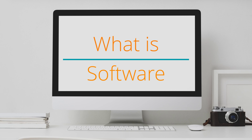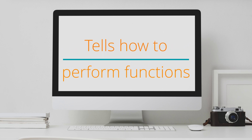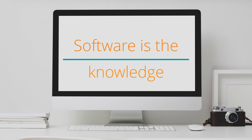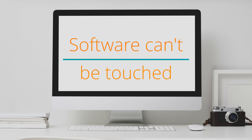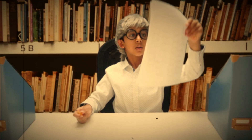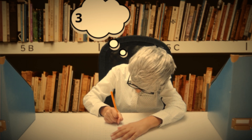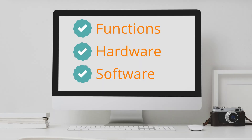Now let's see what software is. Software is a collection of data and computer instructions that tells the computer how to perform its functions. In other words, software is the knowledge and information that a computer needs to perform its required functions. For example, a computer needs software to understand which key you are pressing on the keyboard and what to display on the monitor. Unlike hardware, software can't be touched. Software is just like Mr. Accountant's knowledge of accounting and numbers, which can't be touched, but Mr. Accountant needs them to know what to do and how to do it.